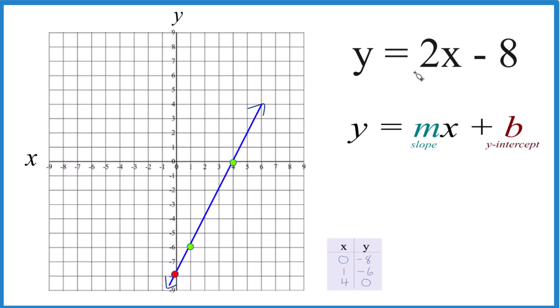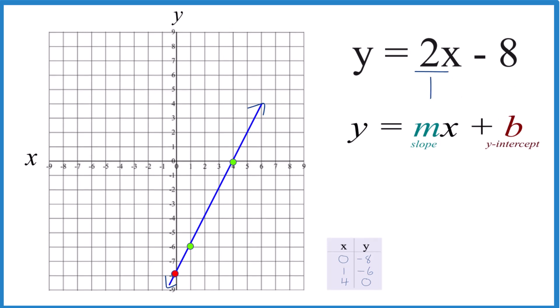Then the slope, instead of 2, we're going to call it 2 over 1. It's still 2, but what we can do now is we can call the 2 rise, and then the 1, we can call that run, rise over run.